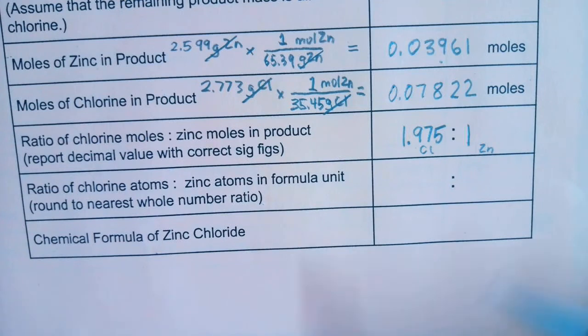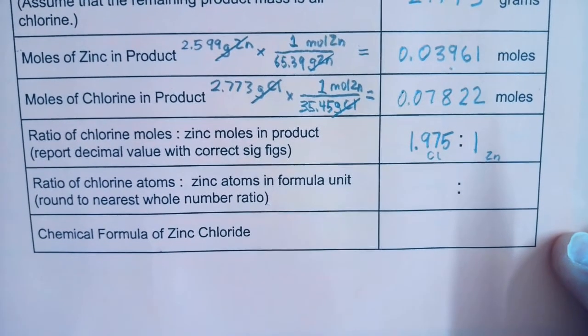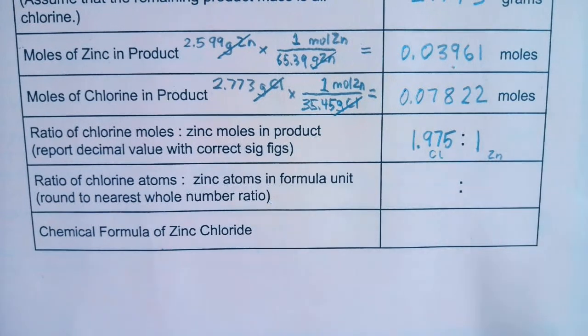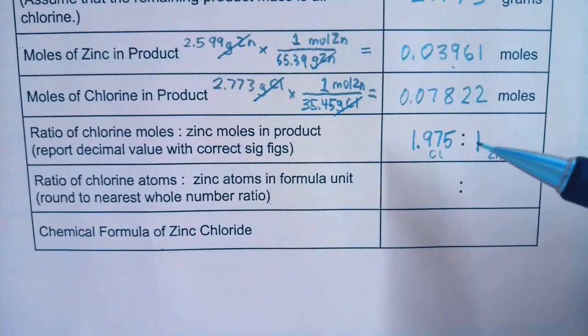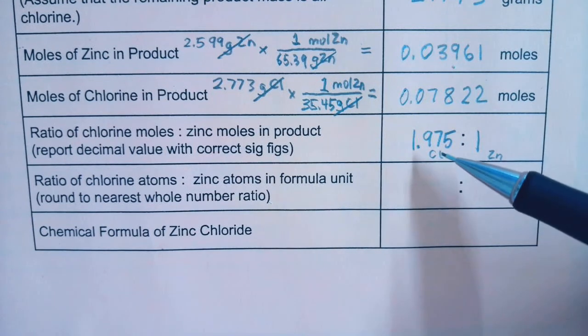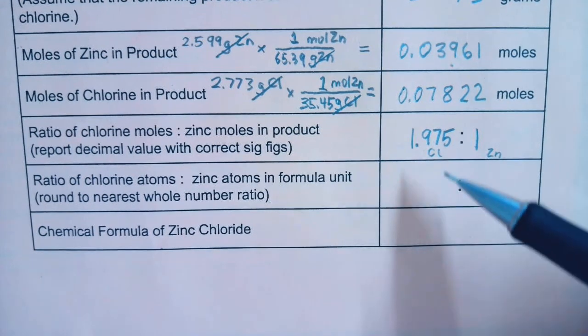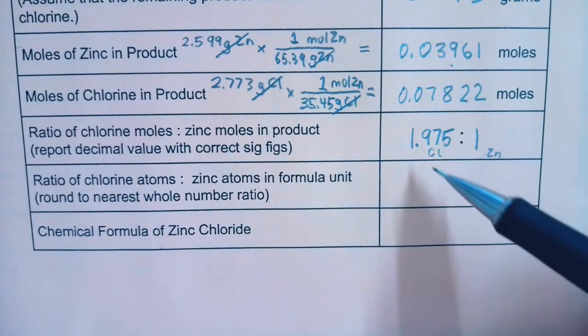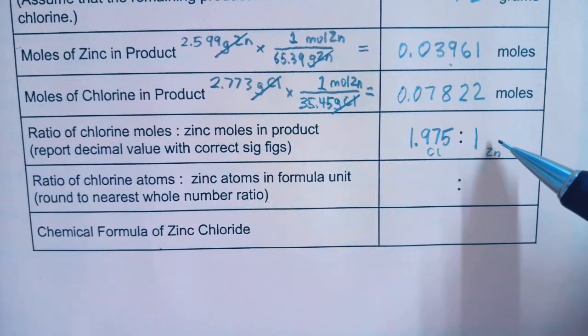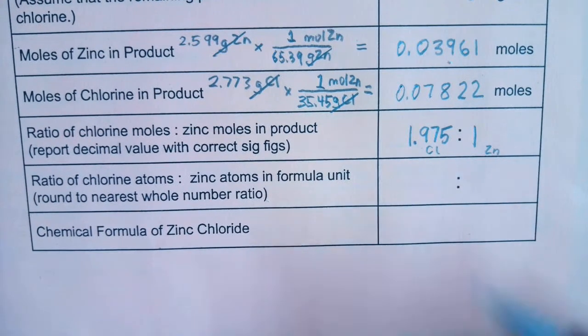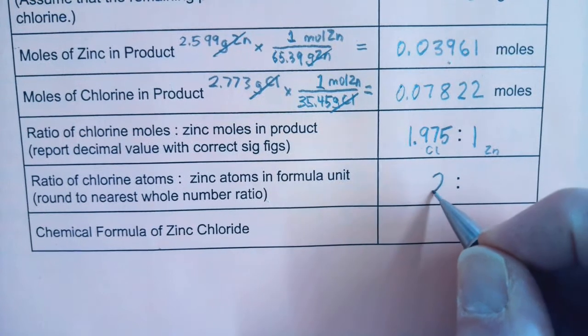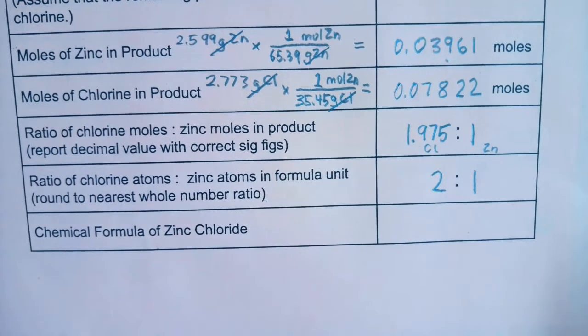We make the assumption, there's a little bit of measurement error in here. Maybe the product wasn't completely dry. Maybe there was a secondary reaction that happened. I know that if I'm reasoning this out, if it's 1.975 moles of chlorine to one mole of zinc, that's pretty darn close to two coming together with one. If the moles are coming together in that ratio, the atoms are coming together in that ratio. So I'm going to assume that it is a two-to-one ratio.